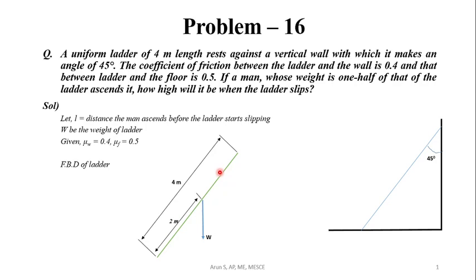When the man reaches a height of L along the length of the ladder, the ladder starts to slip. The weight of the man, W/2, acts at a distance L along the ladder.